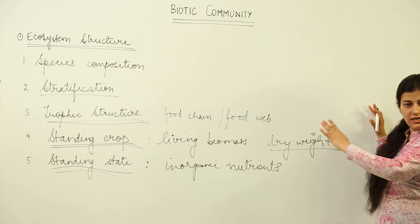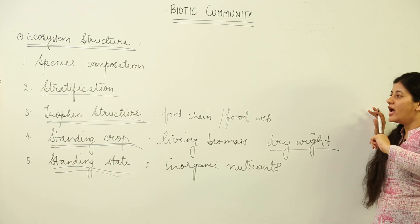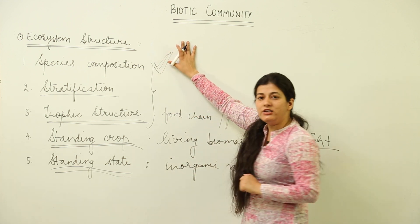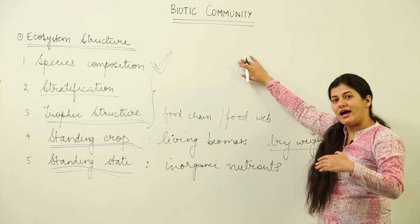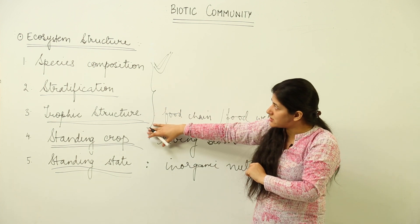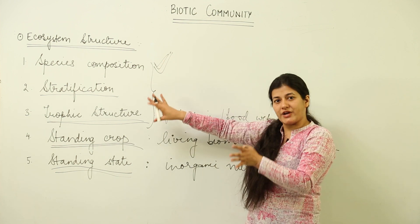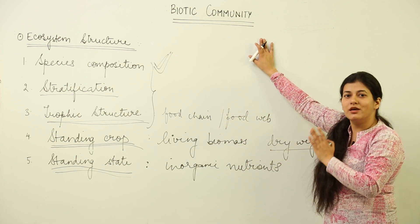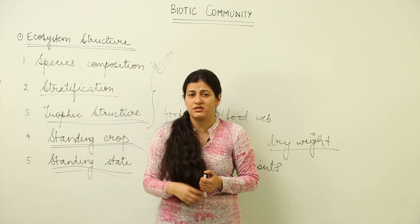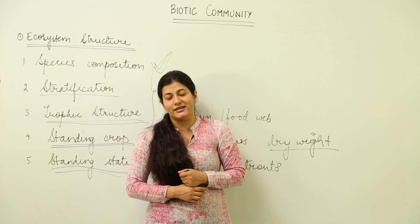Now that we understand ecosystem structure, we need to see how these three factors — species composition, stratification, and trophic structure — play an important role in interactions. Ecology is all about interactions at the ecosystem level, and these three characteristic structural features will be central to our study of Biotic Community. This was the introductory lesson; the next lesson will outline the scope of our understanding in this topic.